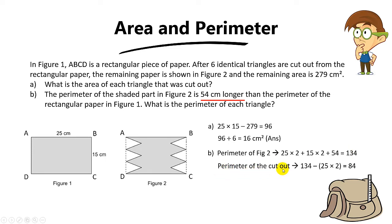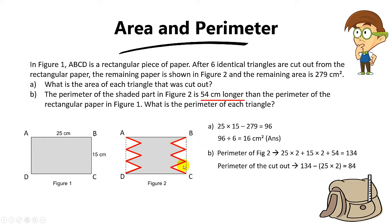To find the perimeter of the cut-out portion, you take 134 minus 25 and 25. The answer is 84. So 84 is basically the length of all the red colour lines. Of course, if you want a shortcut, you can also take 15 plus 15 then plus 54, and you will still get 84cm — that's the total length of the red colour lines.